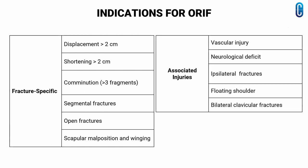Associated injuries that indicate fixation include vascular injuries requiring repair, progressive neurological deficit, ipsilateral upper extremity injuries or fractures, floating shoulder — defined as ipsilateral fractures of the mid-shaft of the clavicle and the neck of the glenoid — and bilateral clavicular fractures. When you have these associated injuries, it is better to fix the clavicle.